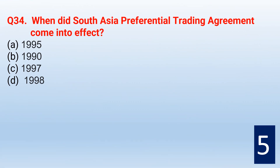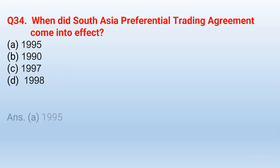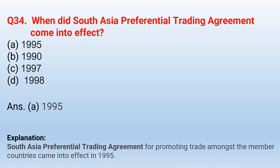When did the South Asia Preferential Trading Agreement come into effect? The correct option is option A — 1995. The South Asia Preferential Trading Agreement for promoting trade amongst the member countries came into effect in 1995.